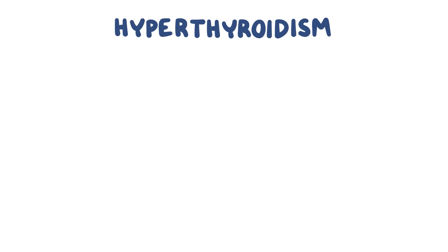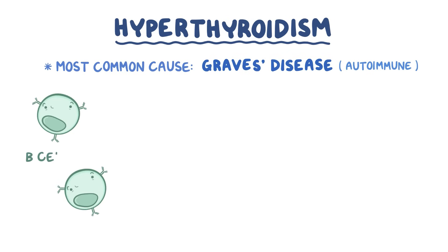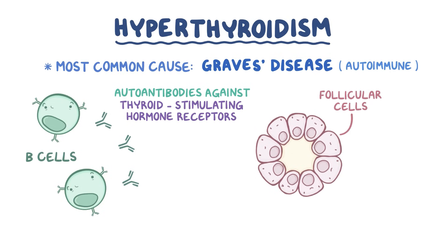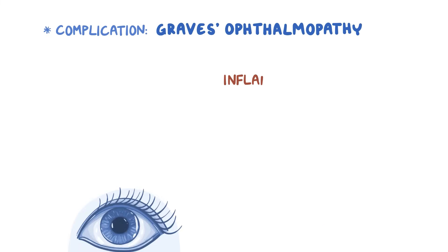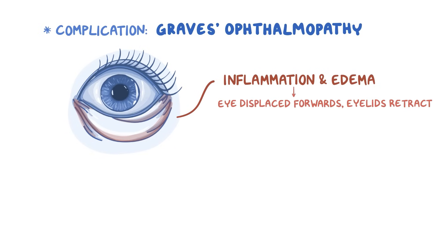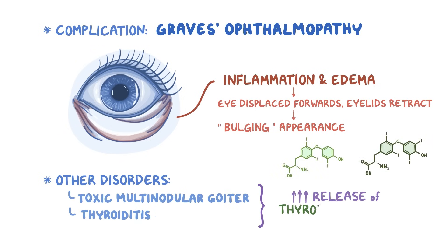Hyperthyroidism can happen in a few different ways. The most common cause is Graves' disease, an autoimmune disorder where B cells produce autoantibodies against thyroid-stimulating hormone receptors on follicular cells. These autoantibodies bind to the receptors and activate them, which causes the thyroid follicles to grow and produce more thyroid hormones. One complication is Graves' ophthalmopathy, which is inflammation and edema in the tissue around the eyes, causing the eyeball to be displaced forwards, eyelids to retract, and giving the eyes a bulging appearance. Other disorders, like toxic multinodular goiter and thyroiditis, can also cause increased release of thyroid hormones.